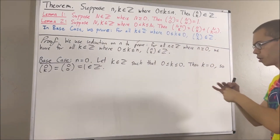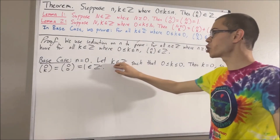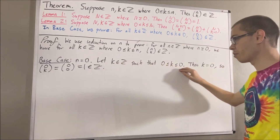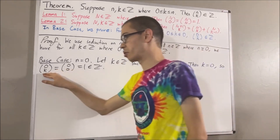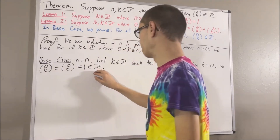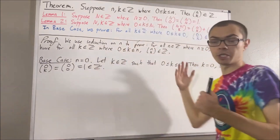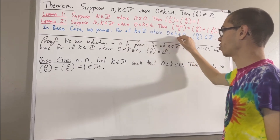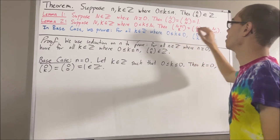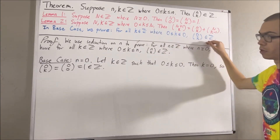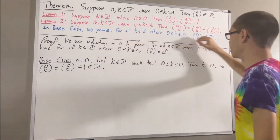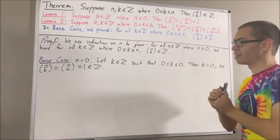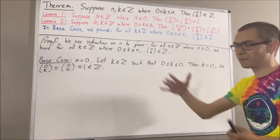So, putting this together, we see given an arbitrary integer k such that 0 is less than or equal to k is less than or equal to 0, it follows that 0 choose k is an integer. Since k was arbitrary, we have shown for all integers k where 0 is less than or equal to k is less than or equal to 0, 0 choose k is an integer. So, we have proven precisely this statement, and this completes the base case. Now, let's move on to the induction step.